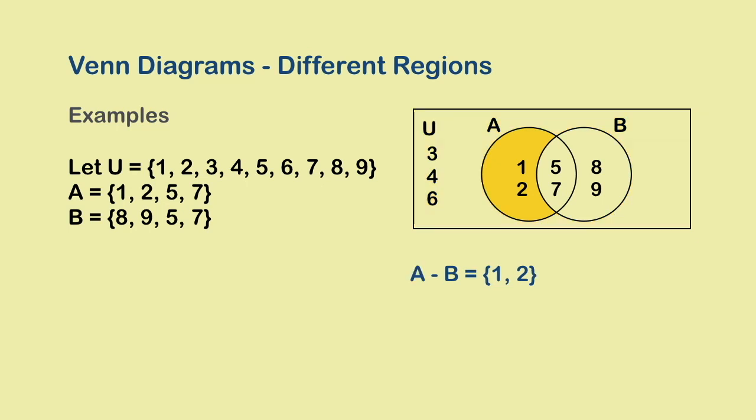This is the region of set A except the part that also belongs to B. So, A-B. It contains all the elements that are in A but not in B.